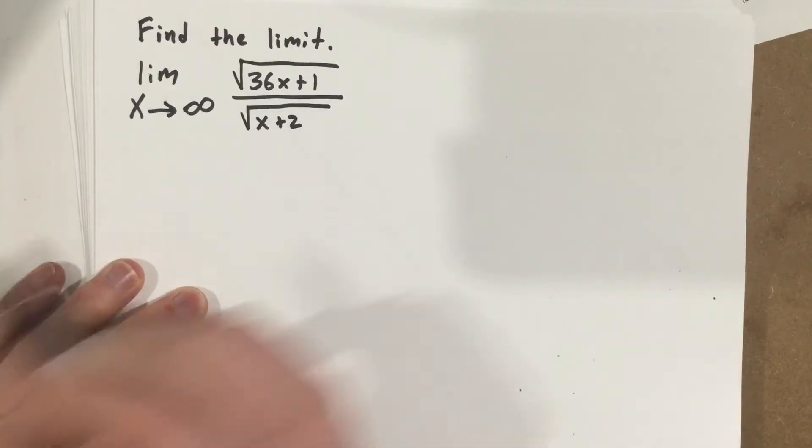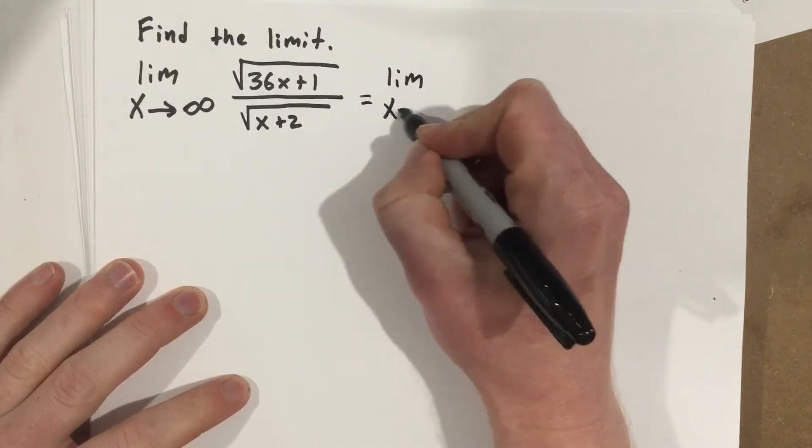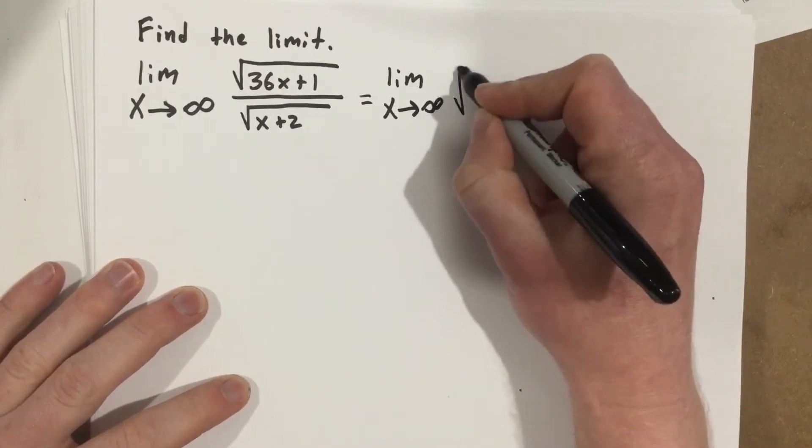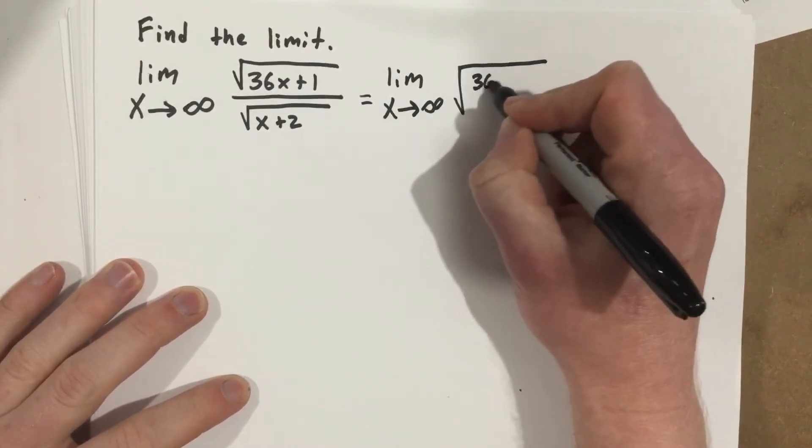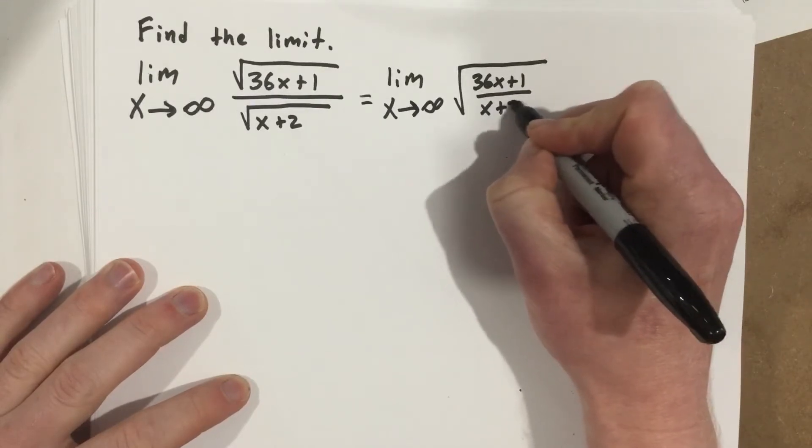Let's start by saying that this is really the limit as x approaches infinity of root 36x plus 1 over x plus 2.